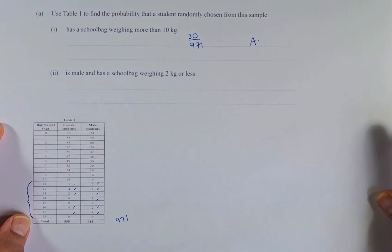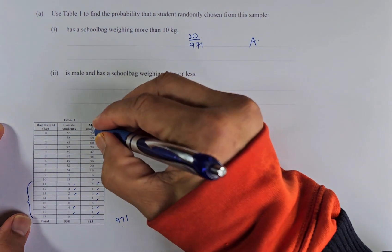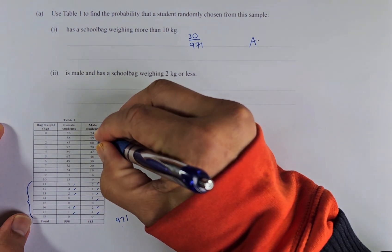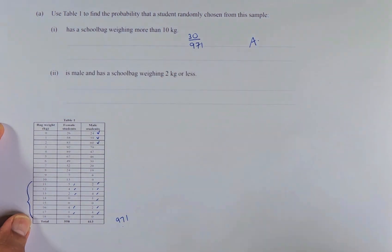Part 2 is male and has a school bag weighing 2 kg or less. So it's a male, so we're looking at the male column here. 2 kg or less: 60 plus 59 plus 24. The total for that will give us the answer of 143.